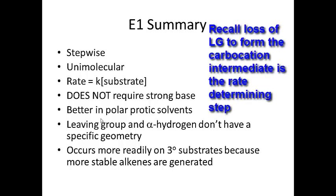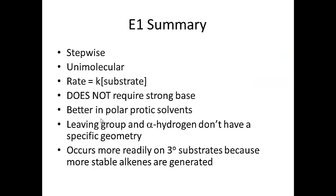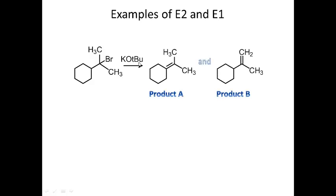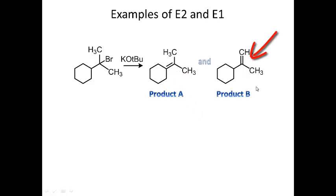Let's look at a couple of examples of E2 and E1. Here I'm treating this compound with potassium tert-butoxide and I get two products — product A and product B. Notice that with these two products, my double bond is in a different place on each one. So how does that happen? Let's look at the mechanism.